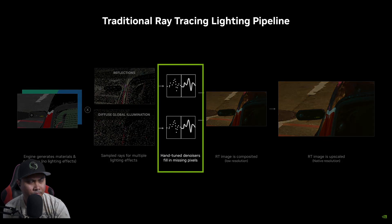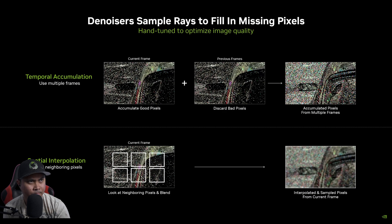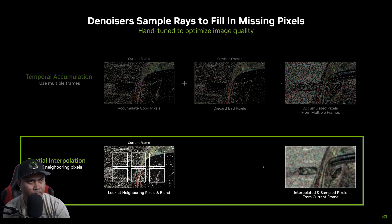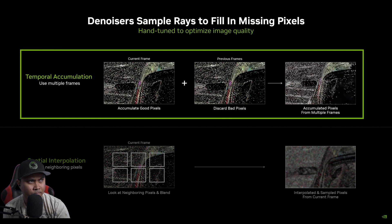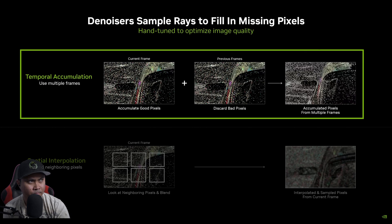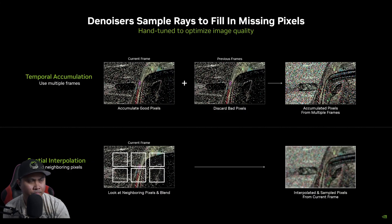We deal with this by using denoisers. There are multiple kinds of denoisers for every frame that are combining information across pixels in the frame by blending them together, and across multiple frames by accumulating information, in order to come up with our best estimate of how the scene looks. Denoisers have a few common challenges.